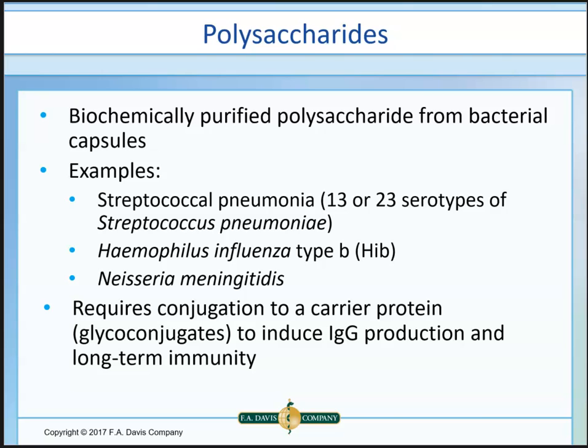Polysaccharide vaccines use purified polysaccharides, usually from the bacterial capsule. Examples include Strep pneumo with many serotypes — that's the Prevnar vaccine — Haemophilus influenzae type B (Hib), and Neisseria meningitidis. These require conjugation to a carrier protein because they're too small on their own — this is why you're asked about allergies to yeast or eggs before vaccination. The carrier protein with the purified polysaccharide induces IgG production, providing long-term immunity.